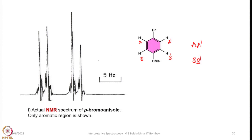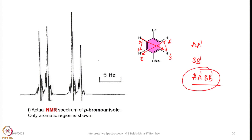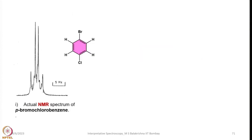Another example is bromoanisole. The coupling of one proton with another differs from the coupling of a corresponding proton because the bonds are farther away; as a result, although they are chemically equivalent their interactions are different, giving rise to a secondary spin system which we call AA'BB'. Another example is para-bromo chlorobenzene.